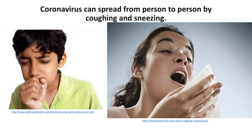The virus spreads from person to person, usually between people who are in close contact with one another — about within six feet or so. The respiratory droplets produced when an infected person coughs or sneezes is what transmits the virus. People are thought to be most contagious when they are most symptomatic. Some spread might be possible before a person shows symptoms, but it's not thought to be the main way this virus spreads. It may also be possible to get COVID-19 by touching a surface that has the virus on it and then touching your mouth, nose, or eyes, but this is also not thought to be the main way the virus spreads.